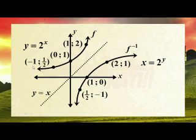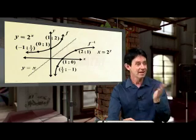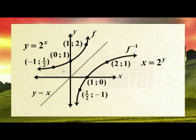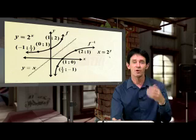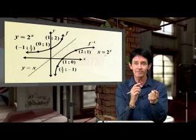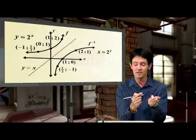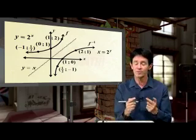Once you've got that, you simply swap the x and y around and you get it. Have a look at this. Minus one and a half becomes a half negative one. Nought one, one nought. One two, two one. And this is called the line of symmetry. And you've got y equals x. The line is a reflection. The exponential graph is a reflection about the inverse, the line y equals x.